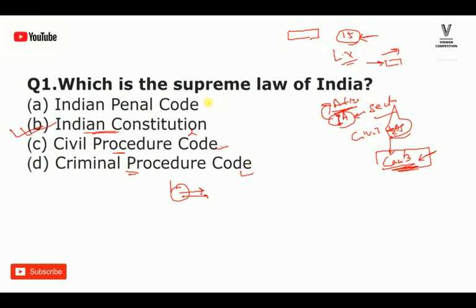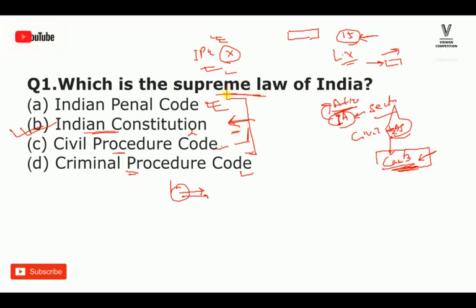The Indian Penal Code means wherever crime is done, we refer to the IPC sections. All three things — framework, procedures, and powers — are listed inside the Indian Constitution. So the Constitution is supreme over all, and if you have supreme law, supreme body, supreme history, supreme power, then the answer is Indian Constitution.